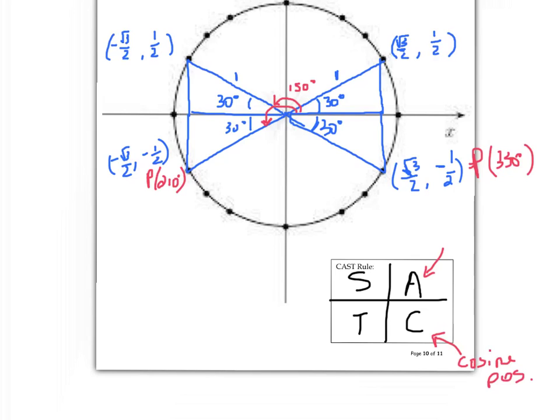A, all are positive. The sine, the cosine, and the tangent are positive. S, the sine is positive. And T, only the tangent is positive. So the CAST rule tells us the cosine only is positive. All three ratios are positive. Only the sine value for these angles is positive. And only the tan value for these angles is positive. Isn't that great?